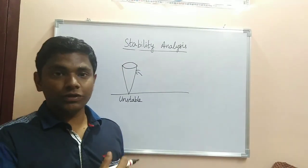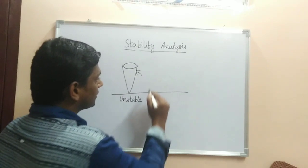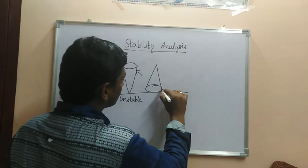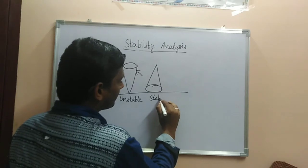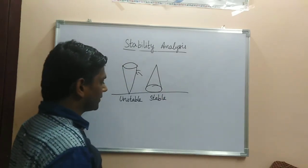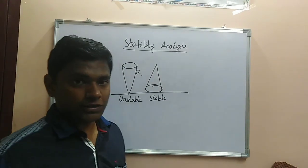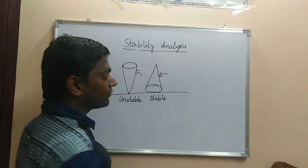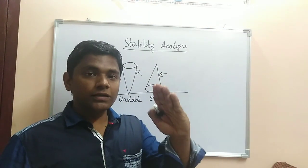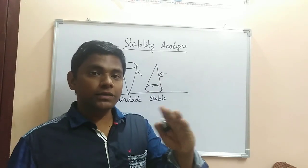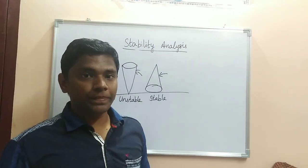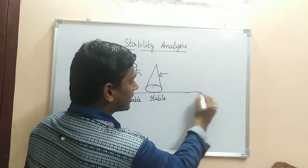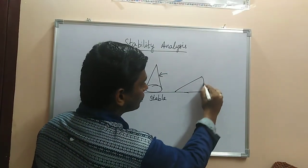Even if you give a small amount of force to the body, it immediately falls to the floor — that is why it is called unstable equilibrium. Now, the same cone kept resting on its base is in a stable equilibrium position. Even if you apply a small force, the cone is slightly tilted but still regains its original position.